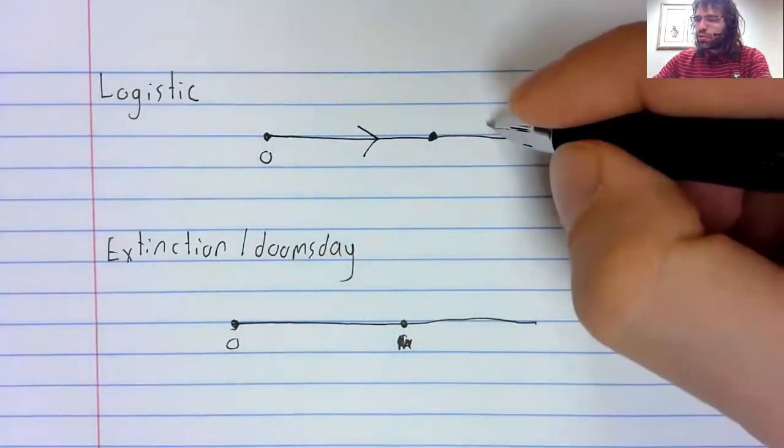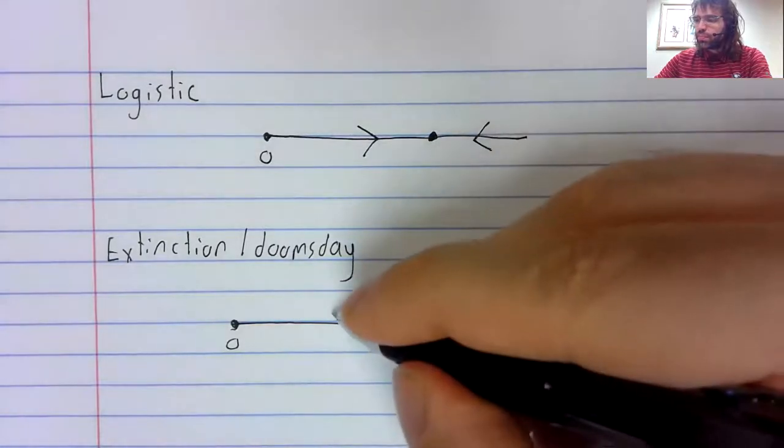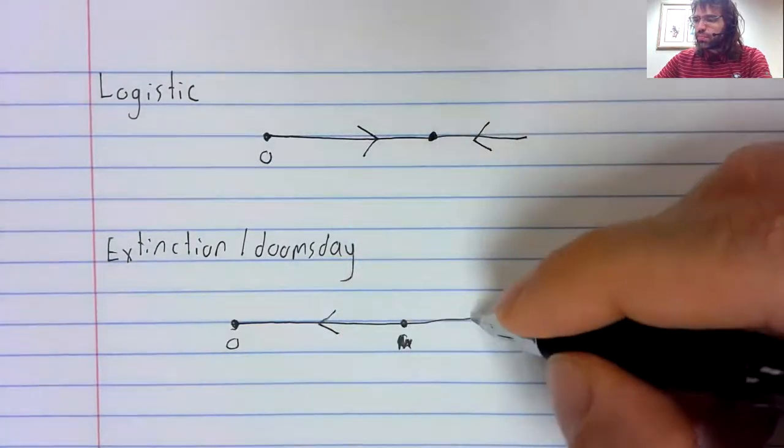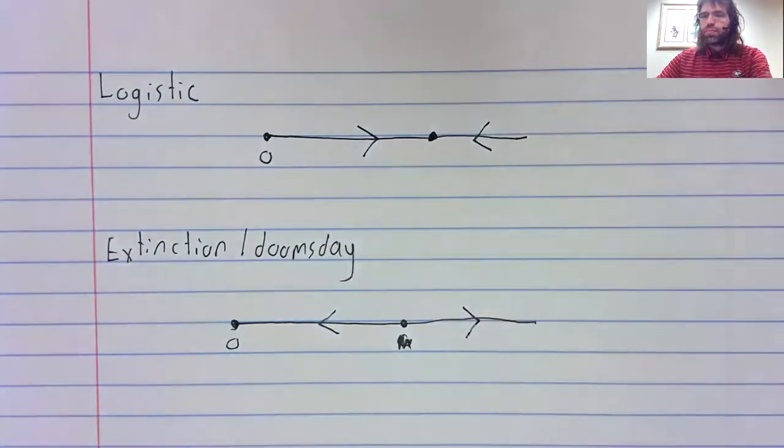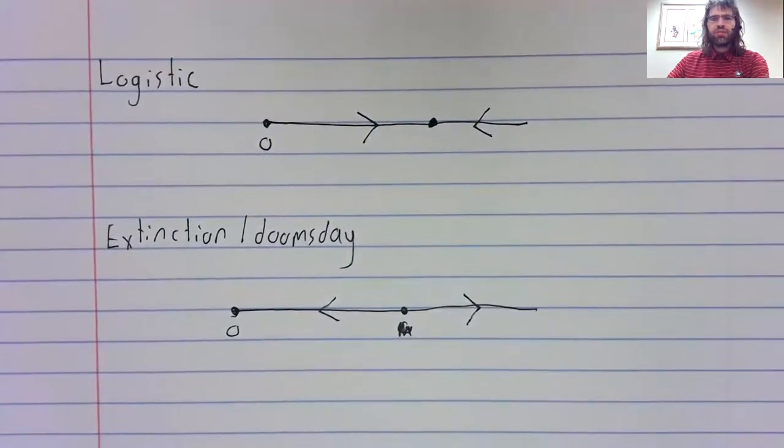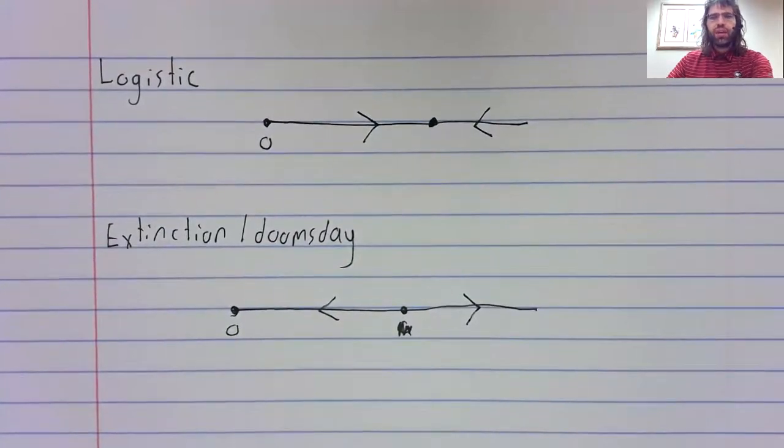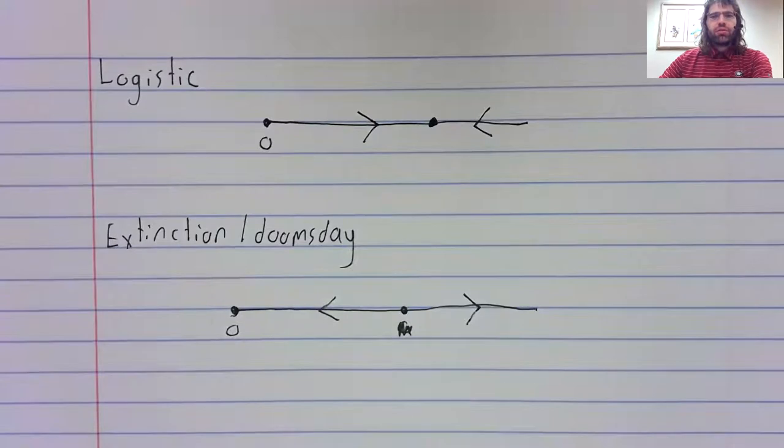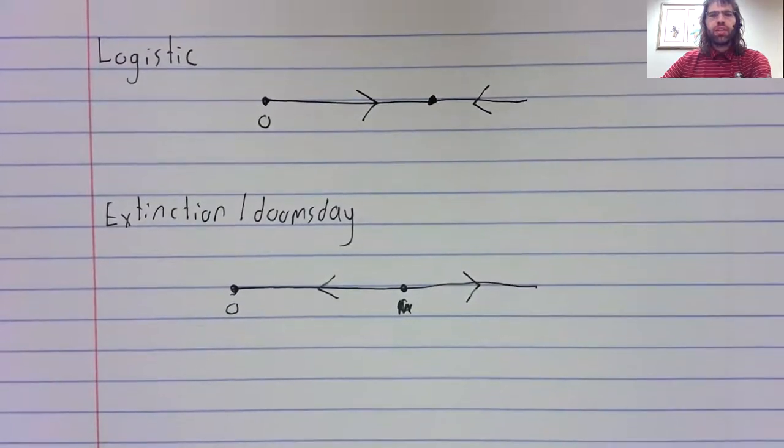Here are the signs of the derivatives. We did this analysis already. And now let's try to understand fixed points in real-world terms. Suppose we're looking at some real-world animal population.